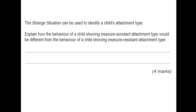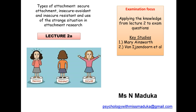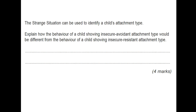The strange situation can be used to identify a child's attachment type. Explain how the behaviour of a child showing insecure avoidant attachment type will be different from the behaviour of a child showing insecure resistant attachment type. For insecure avoidance, the key words you'd be using are that they largely ignore their primary caregiver upon reunion and they have a high exploration behaviour. You're talking about two bits of information for each attachment type.